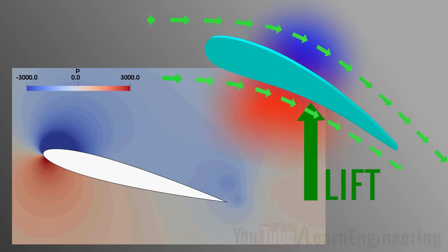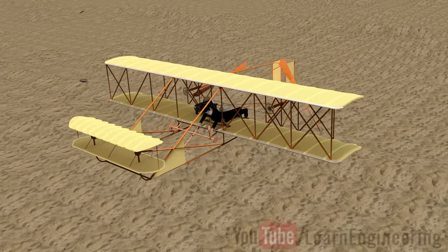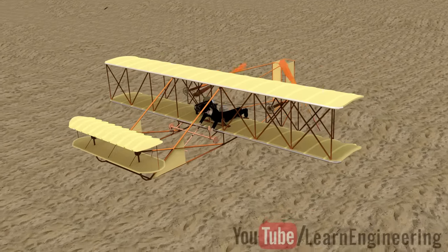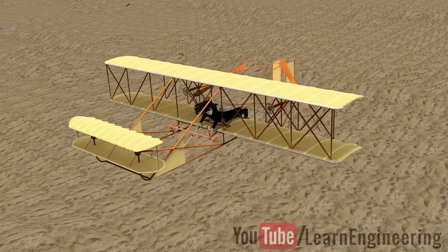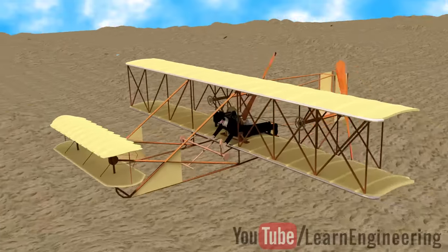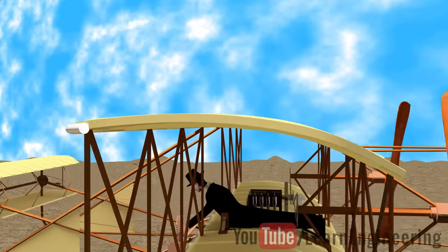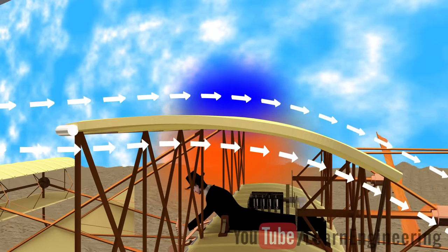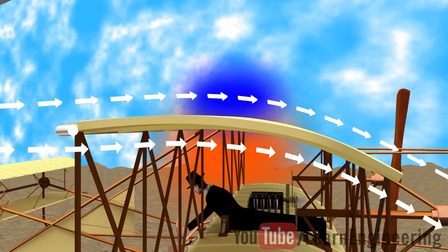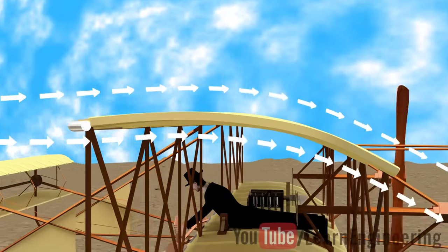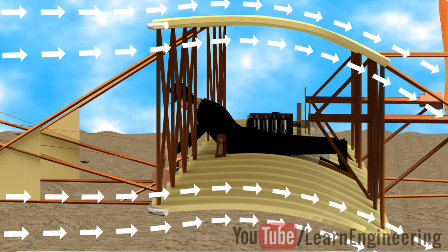Interestingly, in mankind's first successful flight, the Wright Flyer also made use of this same airfoil principle. Even though their airfoils were a simple curved shape, it was sufficient to produce a good downwash. More specifically, their airplane had two such airfoils.